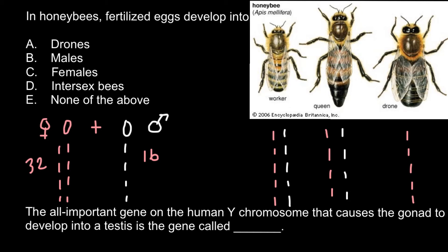So the correct answer is C: in honeybees, fertilized eggs develop into females. The same haplodiploid system is also applicable to ants and wasps. One more comment: the drone has only a single function, which is to mate with the queen to produce the following generation.